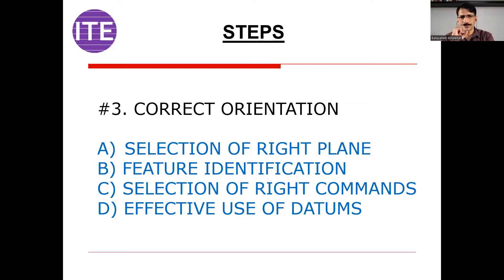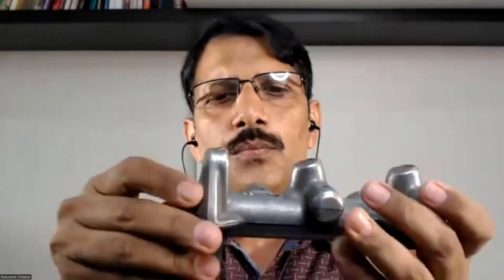The third strategy is correct orientation. I want to give you a tip on how to set the correct orientation of the part. When you start creating a model, there are steps to follow when you receive a drawing. The first activity is to read the drawing — locate all the views, understand various sections, and try to visualize in 3D. For example, here is a component called a TMC master cylinder. When you receive this drawing, you need to decide how to start creating the model.